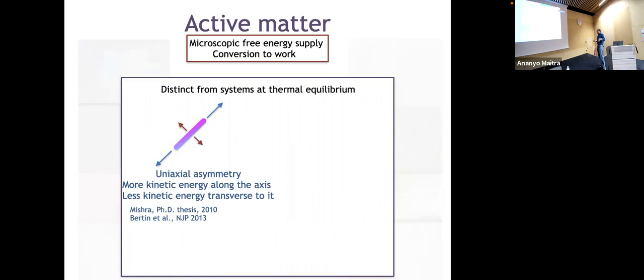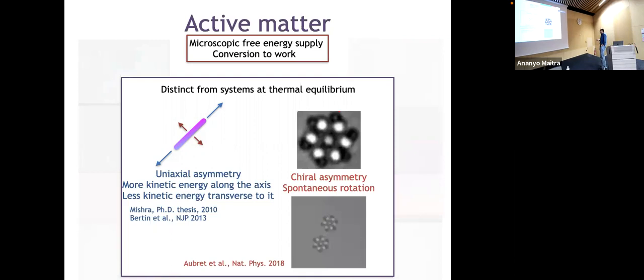Beyond polar objects, you can have elongated objects without an arrow — apolar objects — which shuffle more along their long axis and less along the short axis. You can also have objects with chiral asymmetry, which don't move in a straight line but spontaneously keep rotating because they are chiral. These chiral, continuously spinning objects are what I'll focus on today — not objects that continuously translate, but objects that continuously spin.